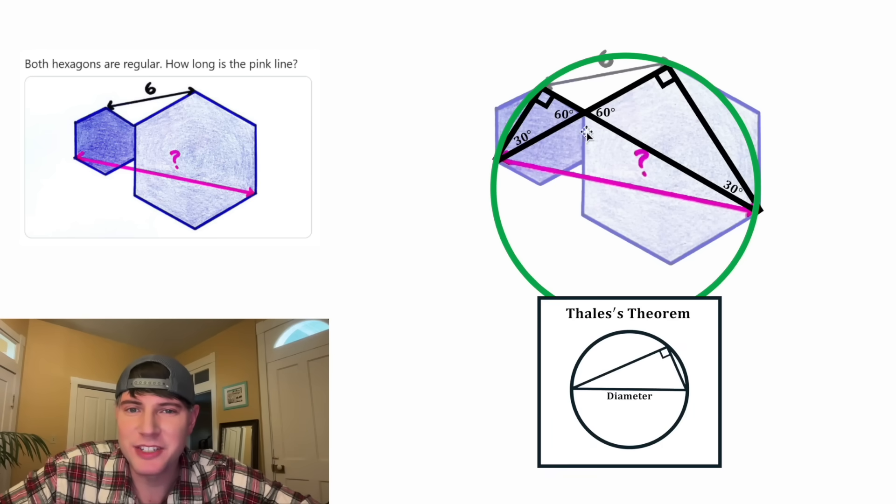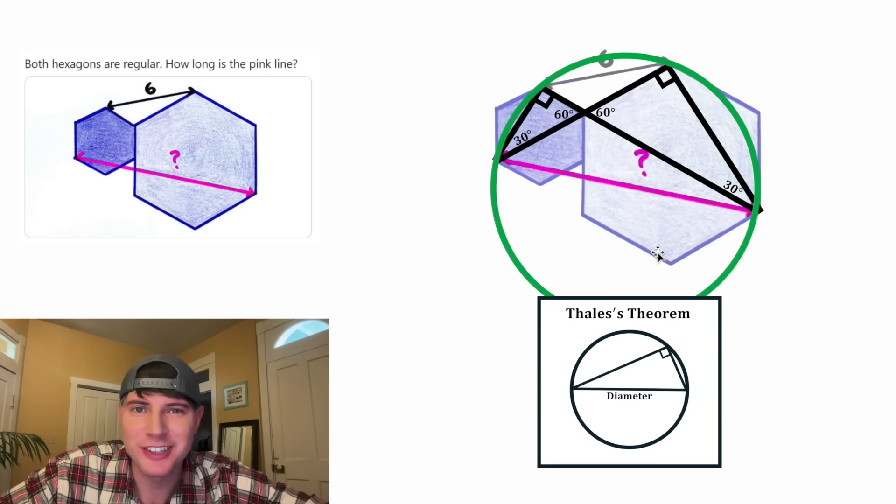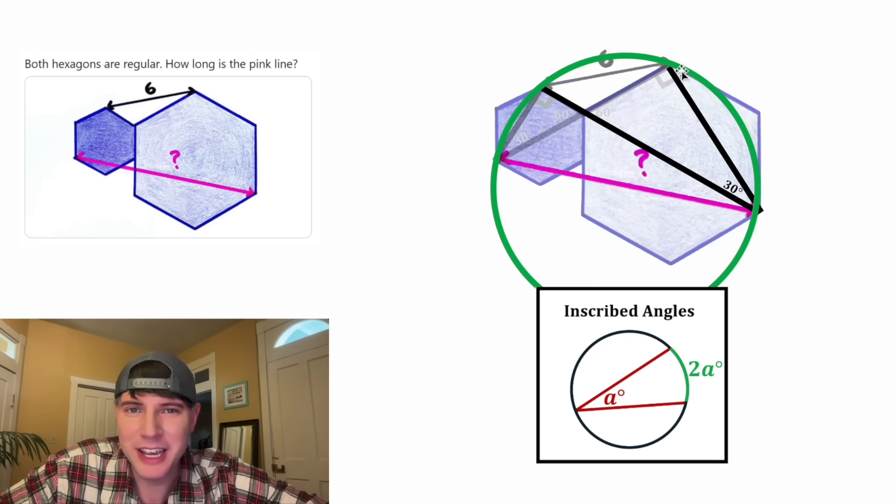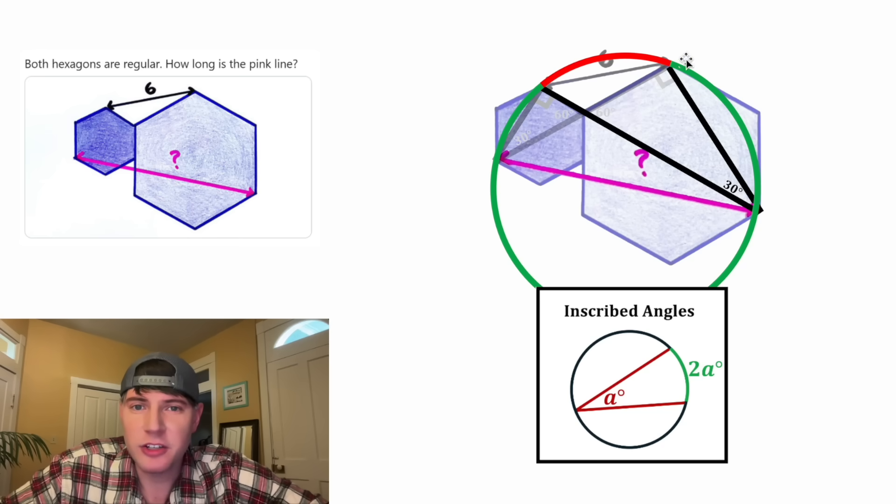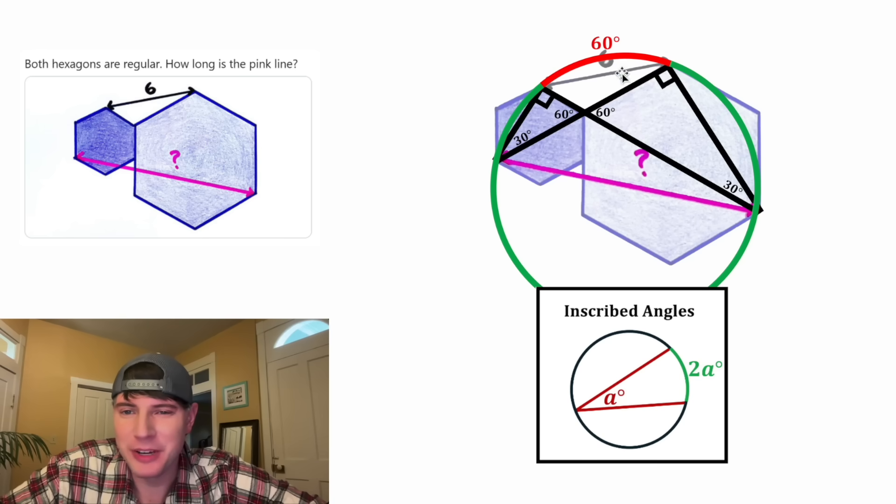These right angles will always stand on the diameter of the same circle. And then another property of inscribed angles is the measure of the arc is always double the inscribed angle. So for this inscribed angle of 30 degrees, this arc will equal double the 30 degrees or 60 degrees. And we can see the same thing happens on this side. This 60 degrees is double this 30 degrees.